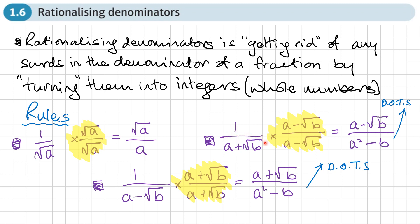The second type is when we have a denominator that is an integer plus a surd. What we do is multiply the top and the bottom of the fraction by the same integer minus the square root of the surd. So you take the denominator and reverse the sign. Now the bottom — we're multiplying denominator by denominator, and you may recognise this is the difference of two squares. So it becomes the first thing squared minus the second thing squared: a squared minus b. This is the quick way — you don't have to expand the brackets.